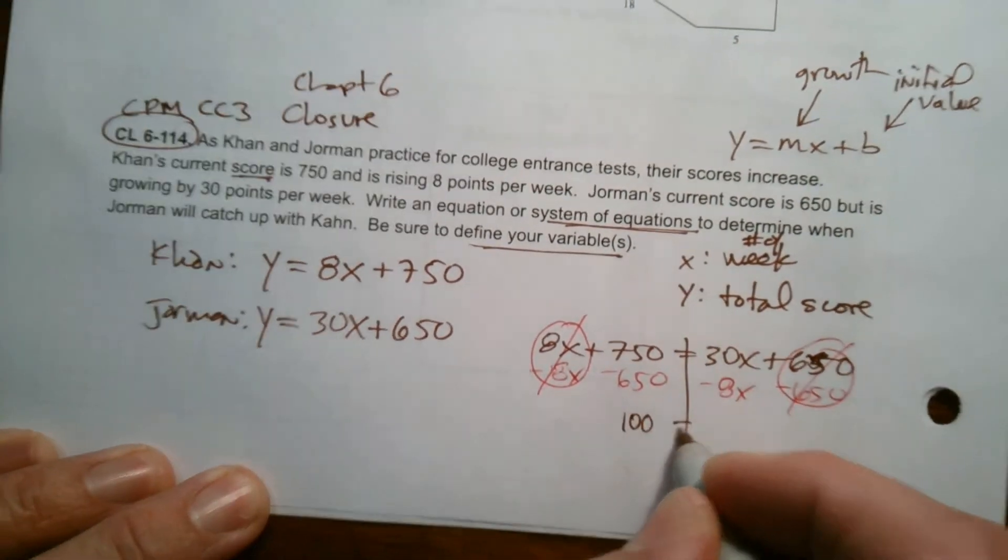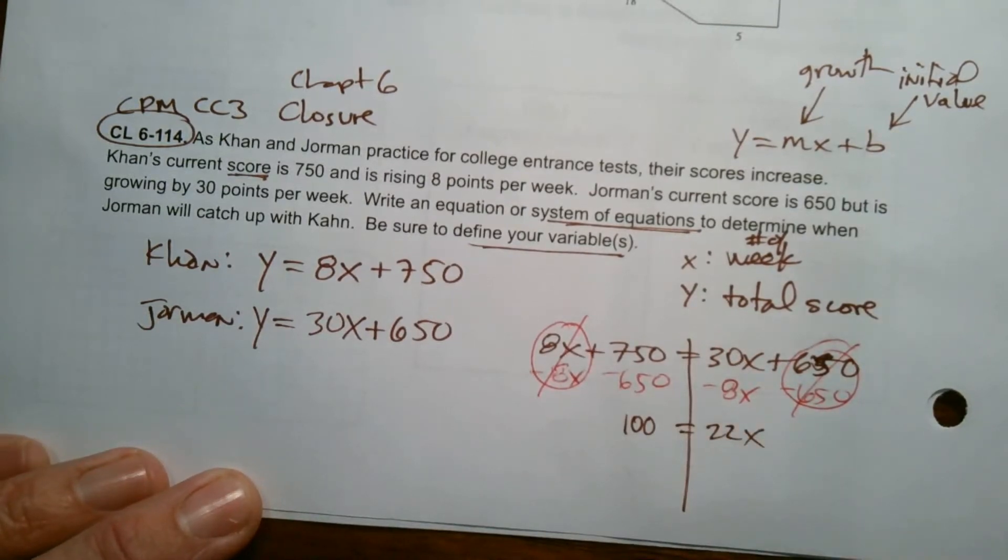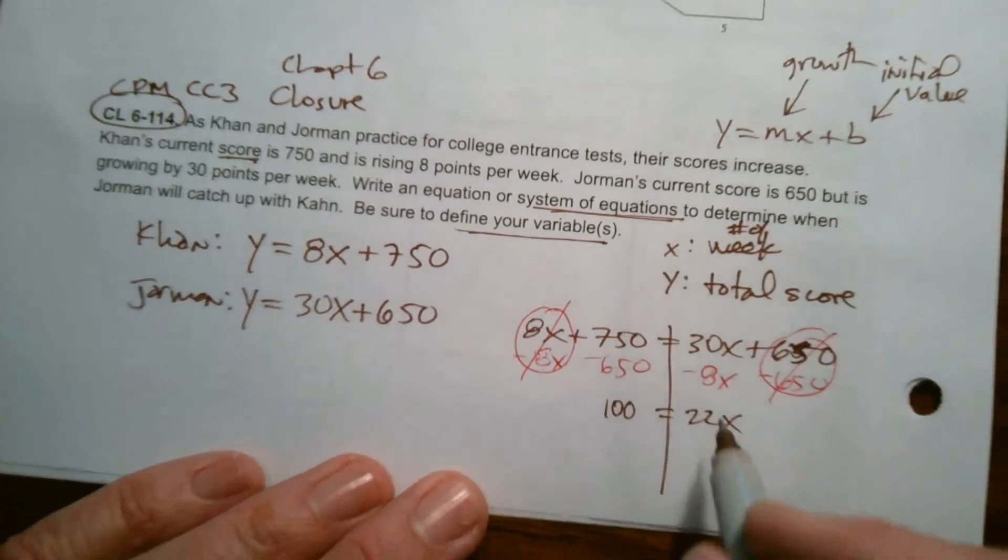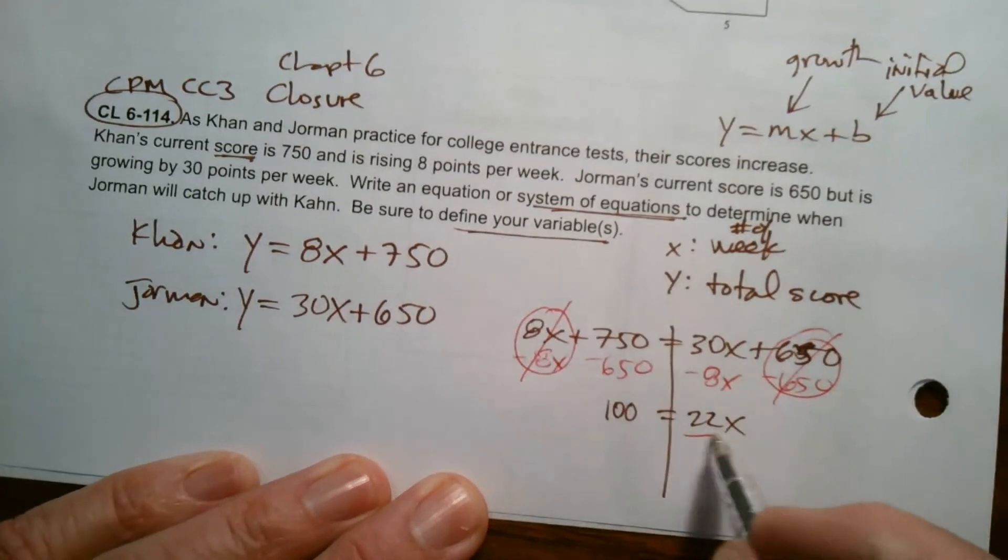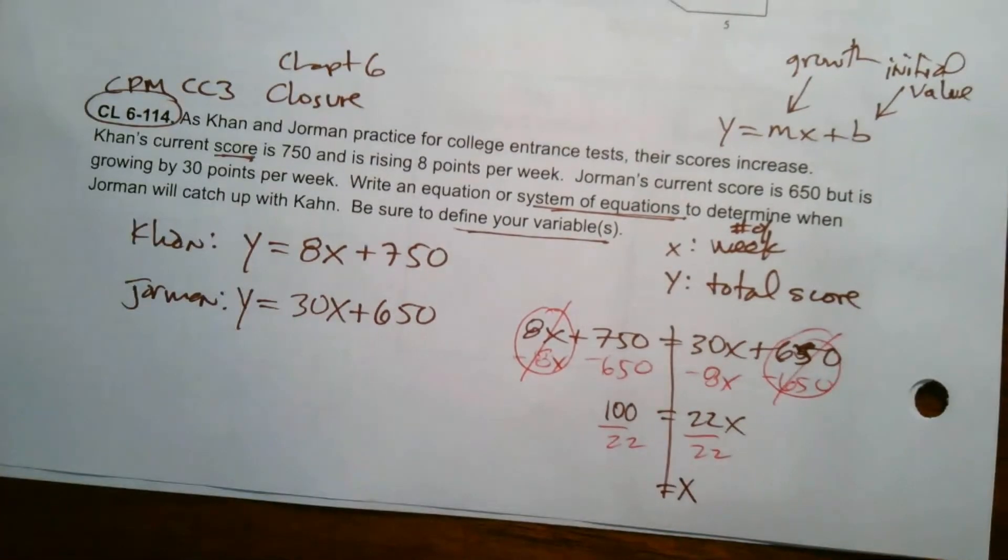So now I have on this side, 100 is equal to 22X. And then if I divide by 22, I'll have my X. So what is 100 divided by 22?